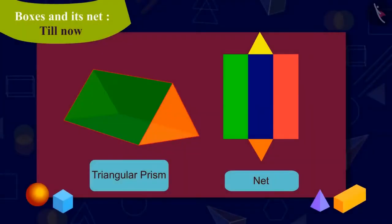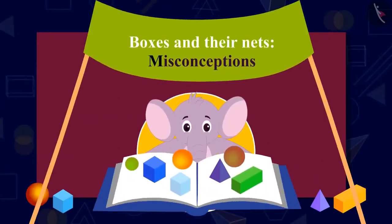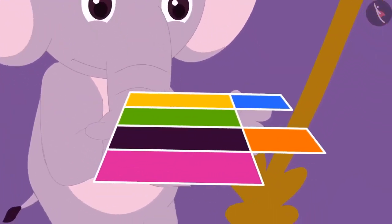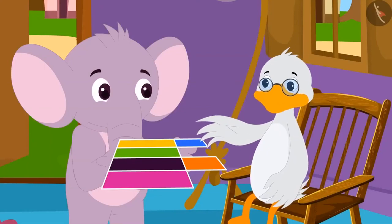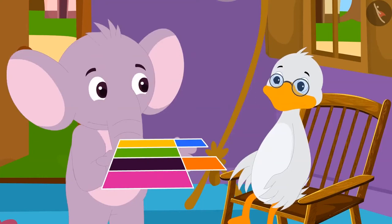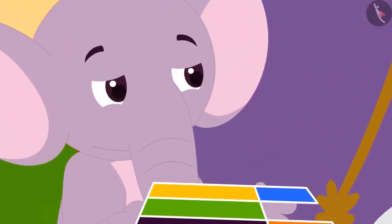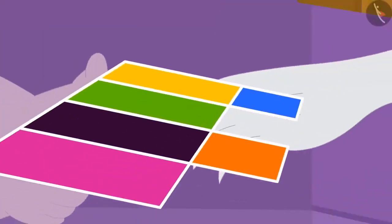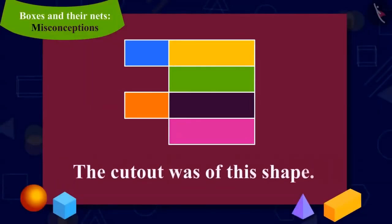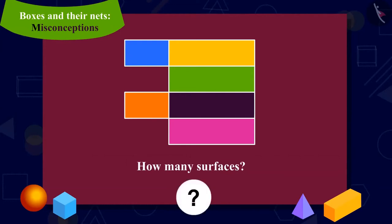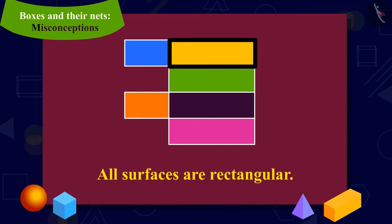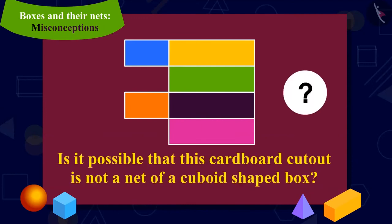Kids, until now we have learned about boxes and their nets. In this video, we will learn about some misconceptions related to them. Appu suddenly came to Babu uncle's house with a cardboard cutout. Appu told him that he bought cutouts of some cuboid shaped boxes, but despite his efforts, he was not able to make boxes from them. Uncle took the cardboard cutout — it was a shape with six surfaces, all rectangular. But kids, can it be possible that this cardboard cutout is not a net of a cuboid shaped box?